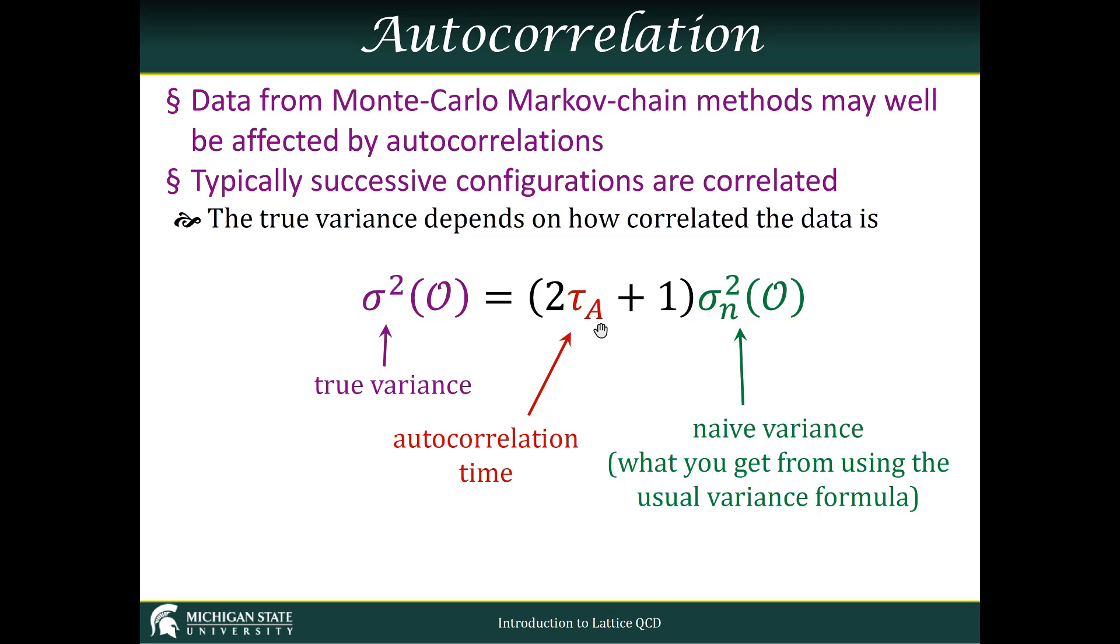You can see if the autocorrelation time is zero—that is, our configurations are perfectly uncorrelated—then we have no problem because this prefactor goes to one. And as the autocorrelation time becomes longer and longer, we get a more and more disappointing true variance compared to our naive variance.